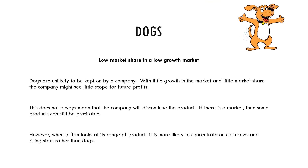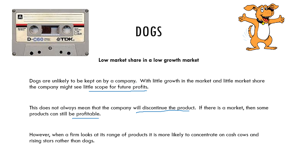Lastly, dogs — low market share products in a low growth market. There is little scope for future profits because we've got a low growth market and our product is not particularly popular. It doesn't mean we'll always discontinue the product; some can still be profitable in a traditional niche, but a firm is unlikely to redevelop or try to grow a dog. An example might be old-fashioned cassettes — most music now is MP3, MP4, and digital, though there may still be a niche for people who like the retro, hipster idea of cassettes.